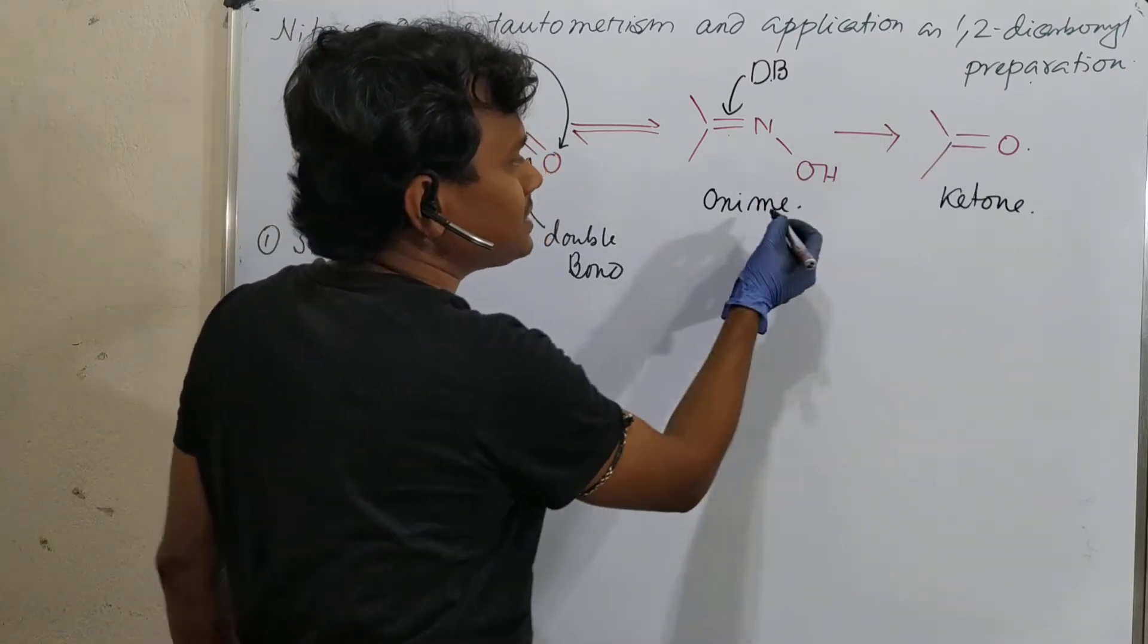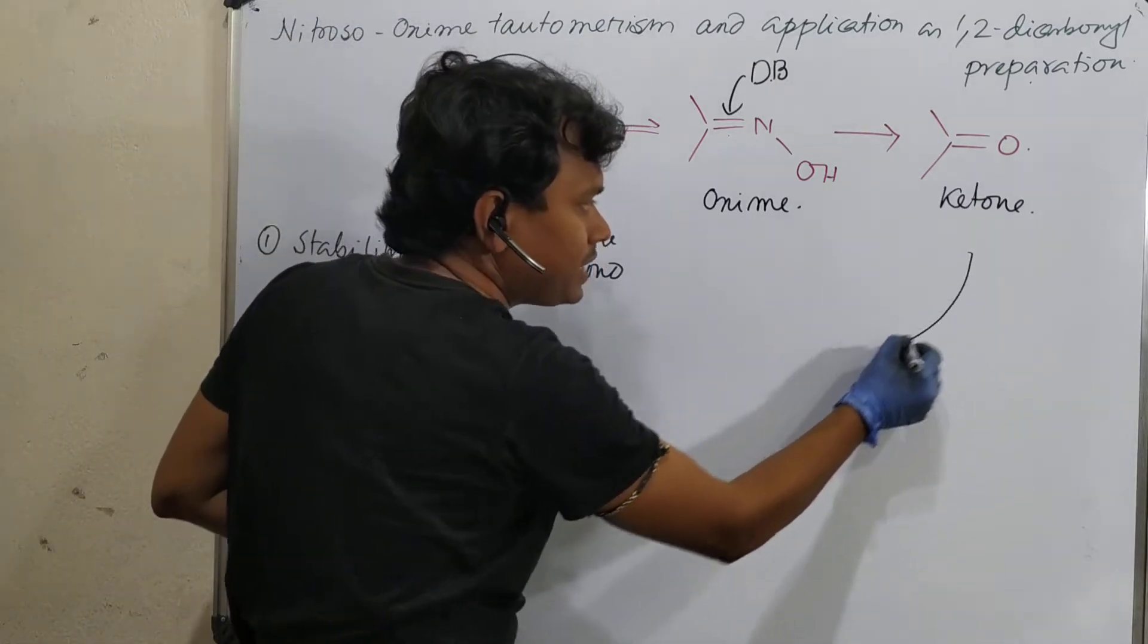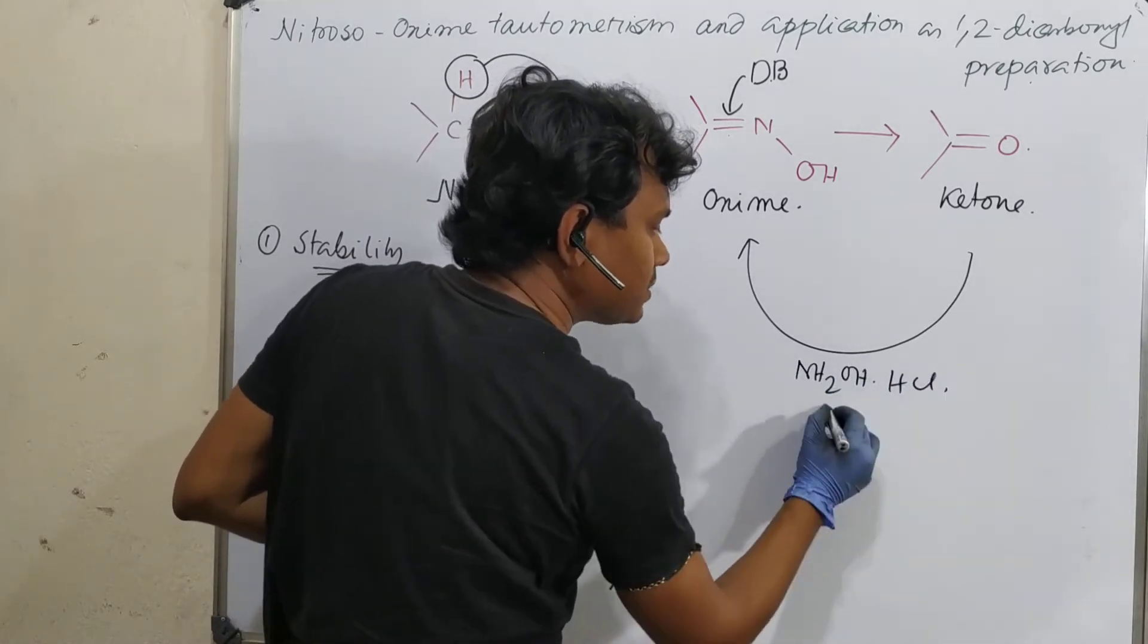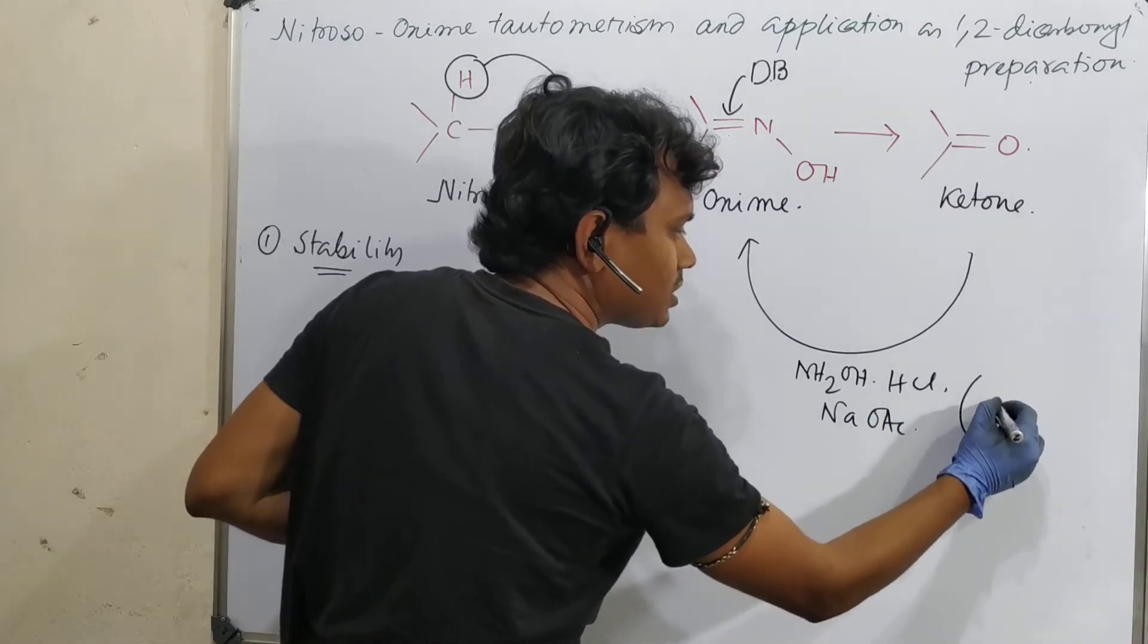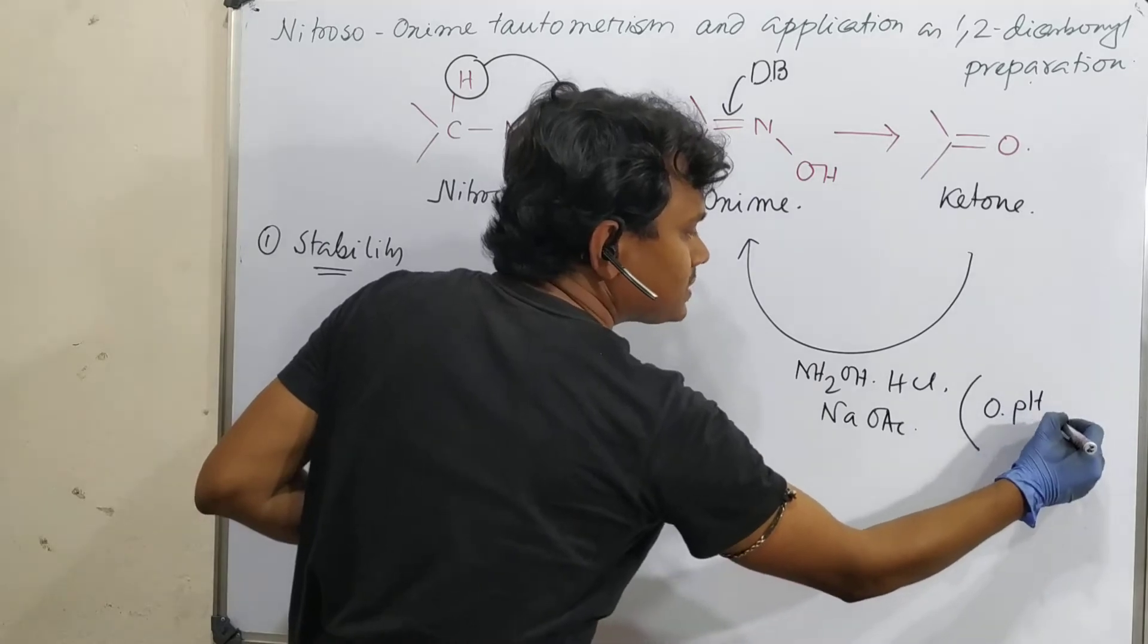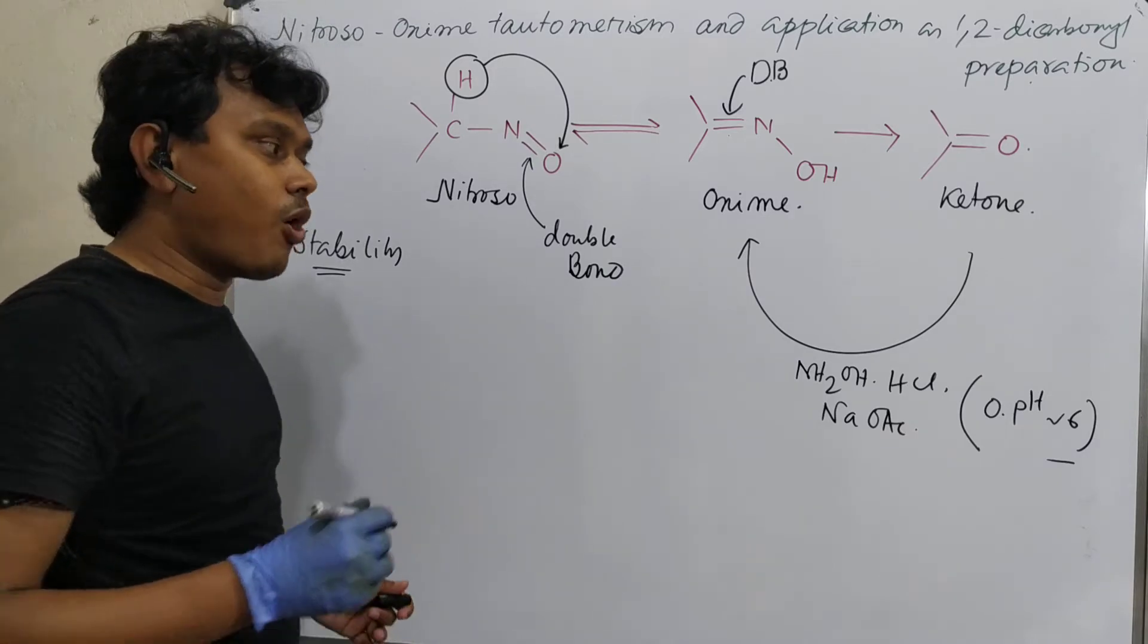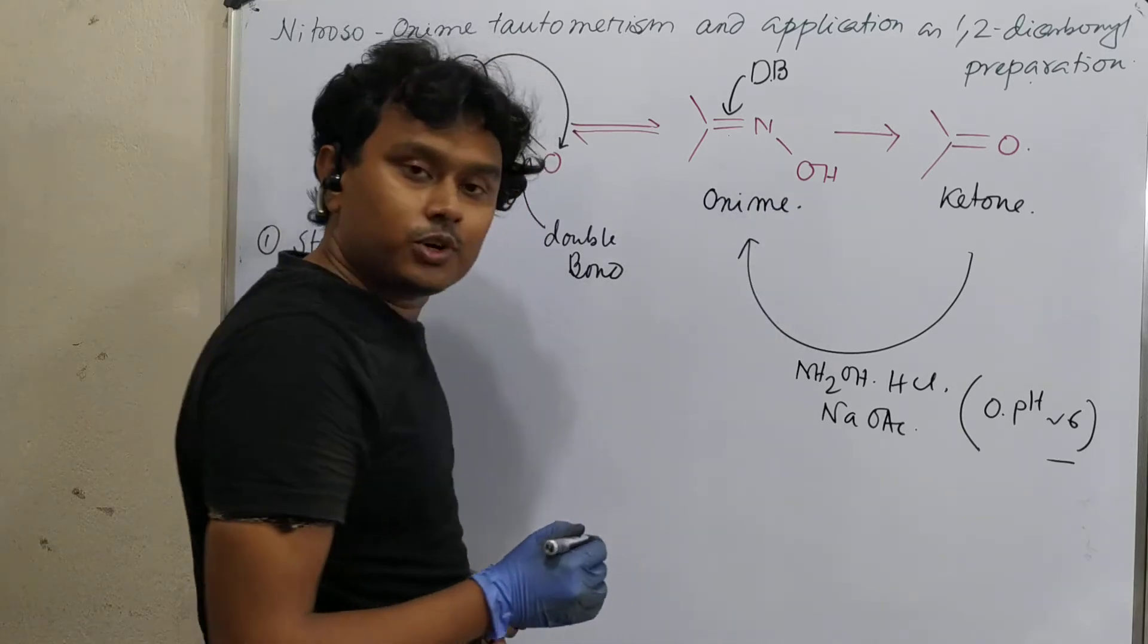Now, question, how is this converted? See, if you check the oxime, oxime is nothing but if you react this carbonyl with the hydroxyl amine hydrochloride in presence of sodium acetate. Optimum pH, optimum pH around 6. Slightly acidic.